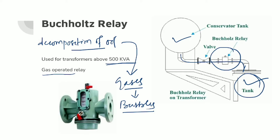These bubbles pass through the pipe connecting the transformer tank and the conservator tank. In this route, the Buchholz Relay is situated. Gas bubbles are trapped in the Buchholz Relay, thereby creating pressure inside it.